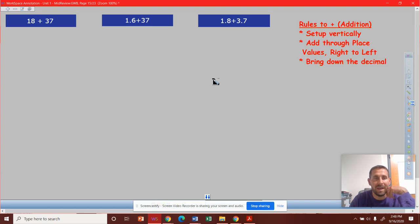So when we set it up vertically, we want to match up and align place values. First one we'll take a look at, we've got 18 plus 37. So we've checked setting up vertically, we've lined up our ones and our tens place. Now we're going to add to those place values.